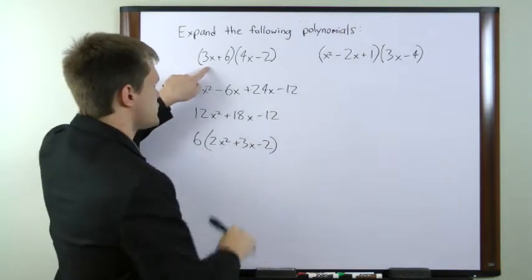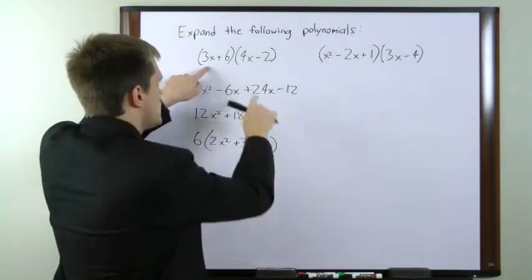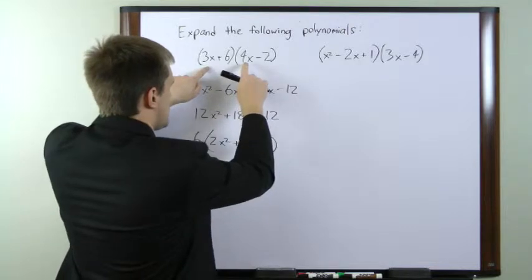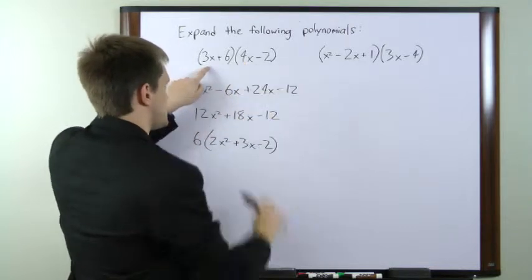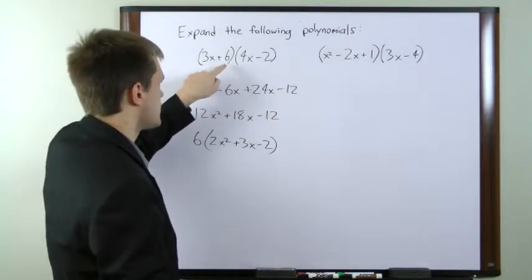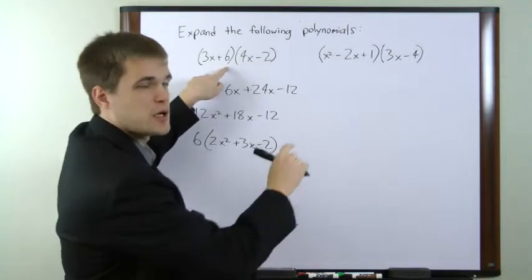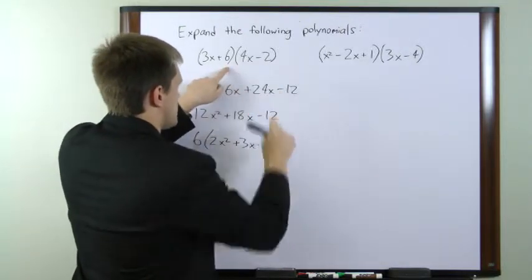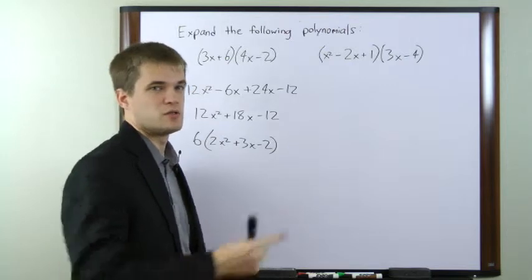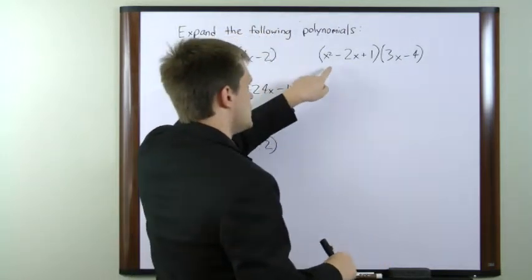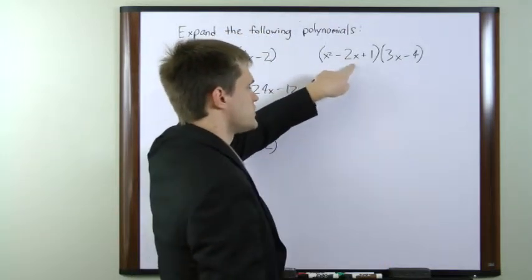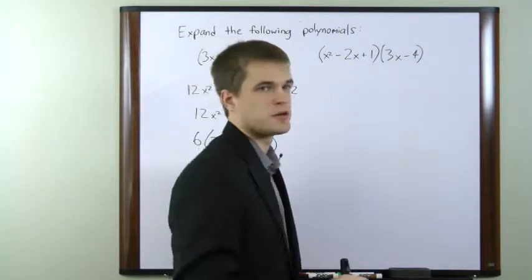The FOIL method takes the first term in the first expression and multiplies it in order by each of the terms in the second expression, then moves on to the second term in the first expression and multiplies it by each of the terms in the second expression. So to extrapolate that to a three-term expression, we'll start with the first term, move to the second term, and then move to the third term.